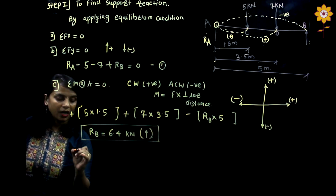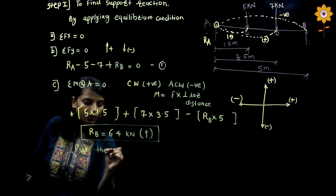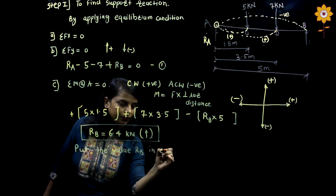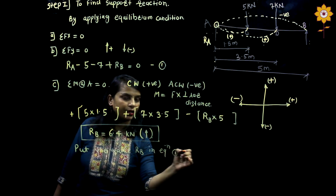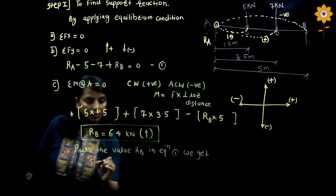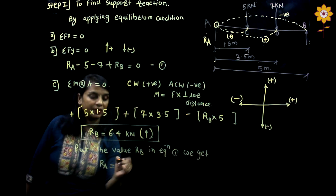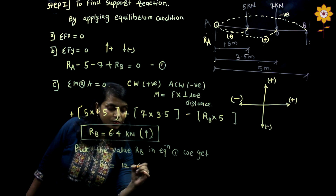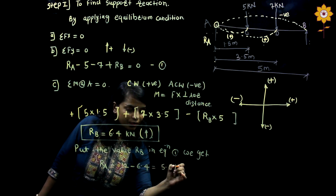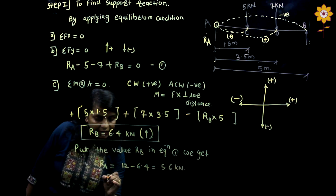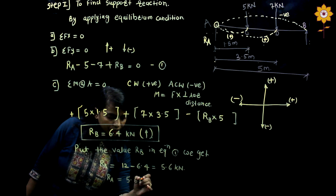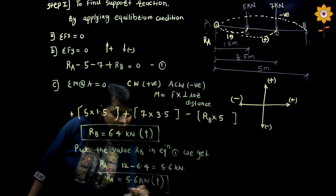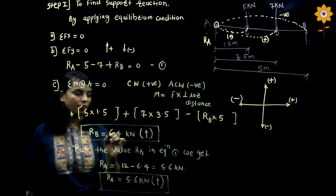Now substitute the value of RB into equation 1. We get RA = 12 minus 6.4, which gives RA = 5.6 kilonewton, a positive value indicating an upward direction. So RA = 5.6 kN is the reaction at support A and RB = 6.4 kN is the reaction at support B.